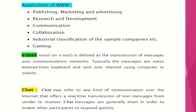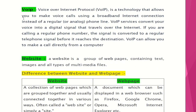Next is VoIP. VoIP means Voice over Internet Protocol. It is a technology that allows you to make voice calls using a broadband internet connection instead of a regular or analog phone line. VoIP services convert your voice into a digital signal that travels over the internet. If you are calling a regular phone number, the signal is converted to a regular telephone signal before it reaches the destination. VoIP can allow you to make a call directly from a computer.